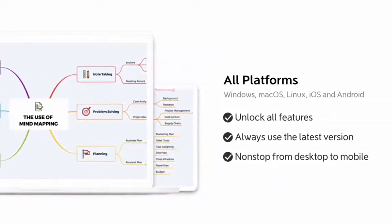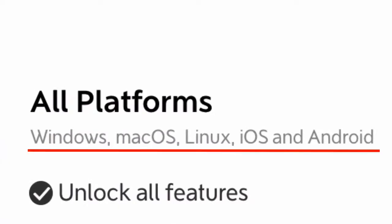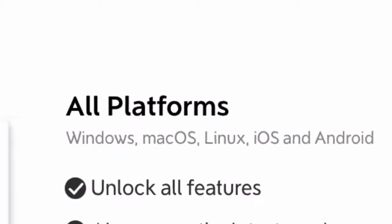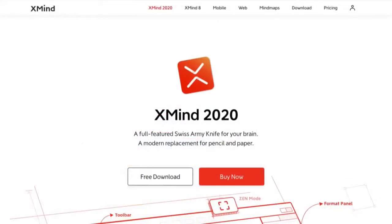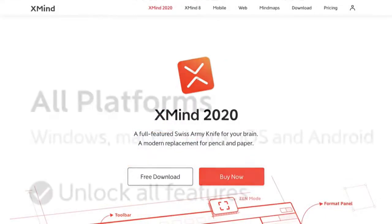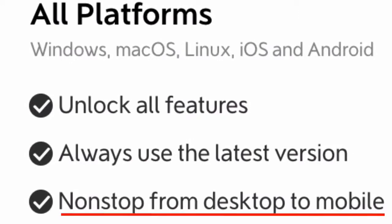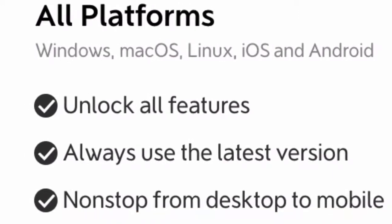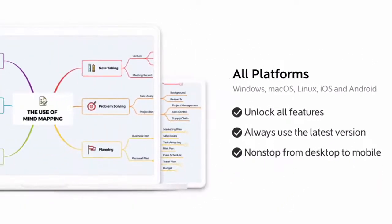You'll be glad to know that XMind 2020 is cross-platform mind mapping software. It works on Windows, Mac and Linux, as well as iOS and Android. With XMind 2020, it's non-stop from desktop to mobile — I'm guessing this means you can continue working on your mind maps across devices.